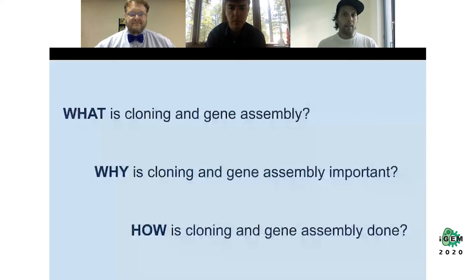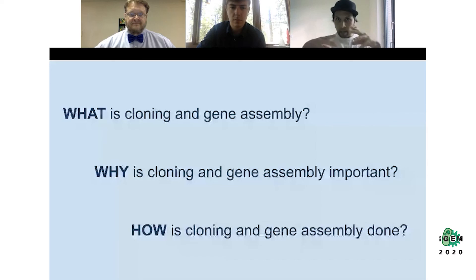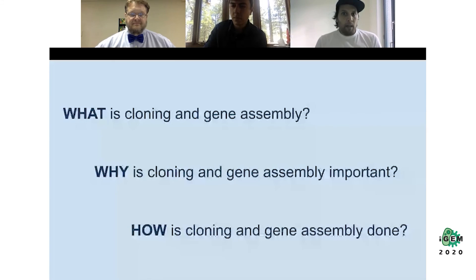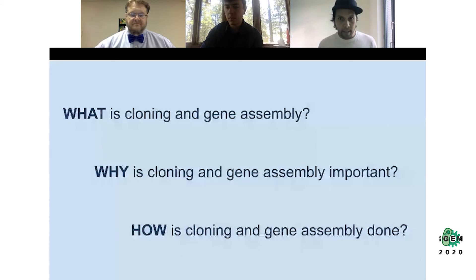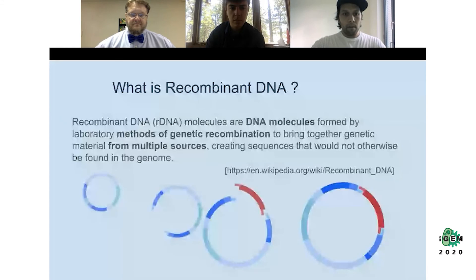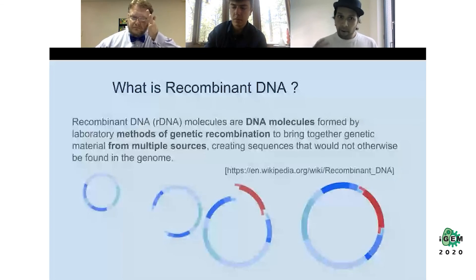We're going to answer three questions: What is cloning and gene assembly? Why is it important? And how is it done? Cloning and gene assembly is the process of stitching different pieces of DNA together and putting them inside a living organism. It's important because it's the basis of your design and engineering processes. It's done through various molecular biology techniques, with help from the organism's natural molecular machinery.